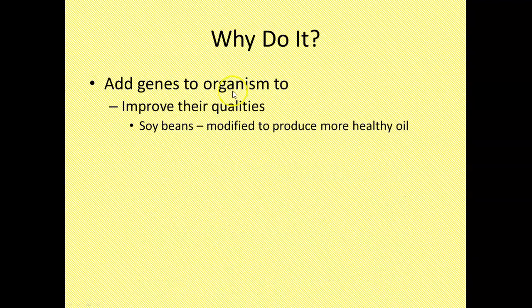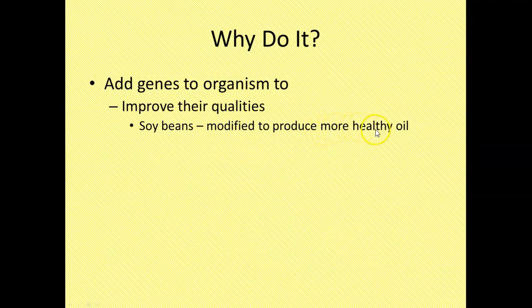What are we talking about? Soybeans, for example. Soybeans produce a healthy type of oil. And what we can do is we can genetically modify the soybeans and they produce even more of this oil.